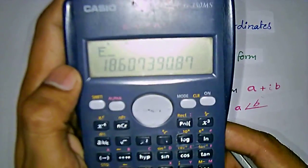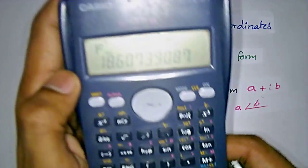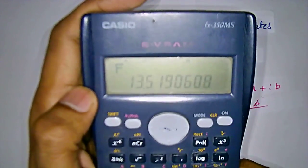Alpha E will store the real part value, alpha F value stores the imaginary part value.